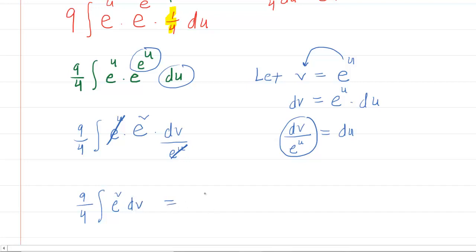We all know that the integral of e to the v dv is just e to the v. Could this problem get any more confusing? We recall that v was equal to e to the u. So you're going to be left with 9 fourths times e raised to e to the u.